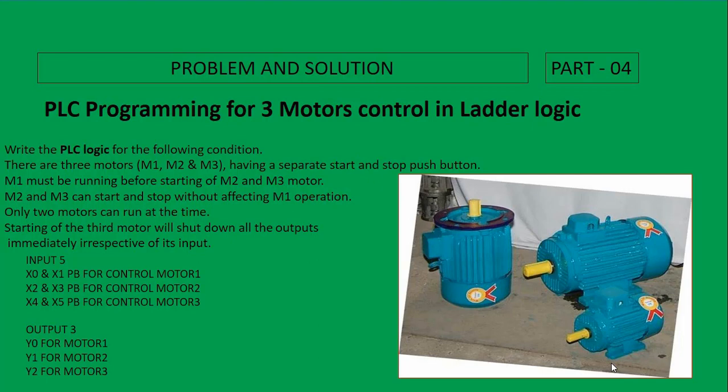In this program we need 5 inputs and 3 outputs. X0 and X1 are push buttons to control Motor 1, X2 and X3 for Motor 2, and X4 and X5 for Motor 3. The three outputs are Y0 for Motor 1, Y1 for Motor 2, and Y2 for Motor 3. Now we can go into GX Works 2 Mitsubishi PLC software to make this program.